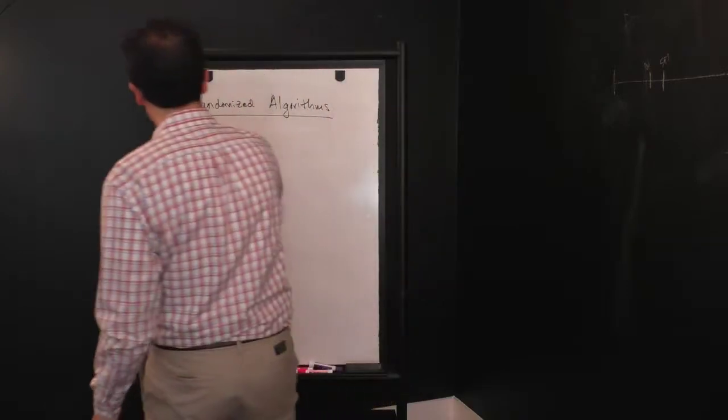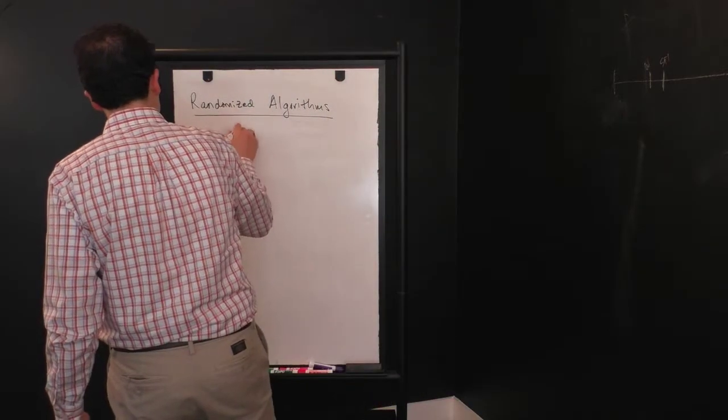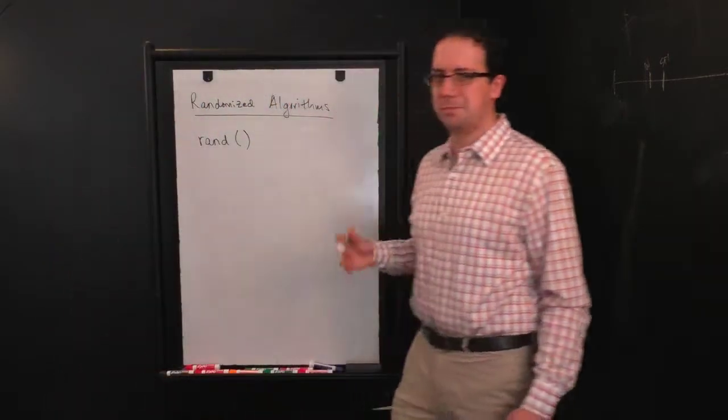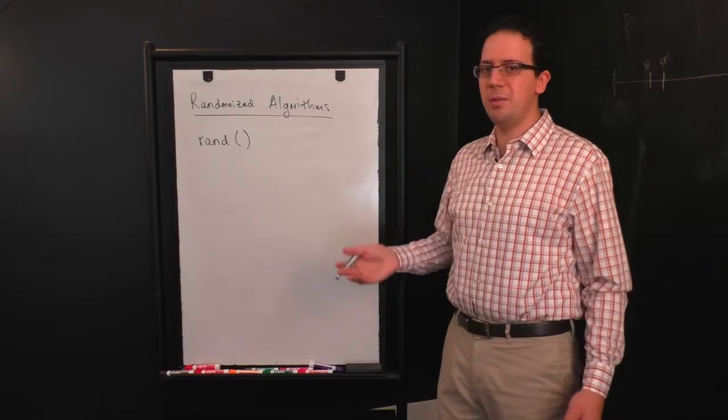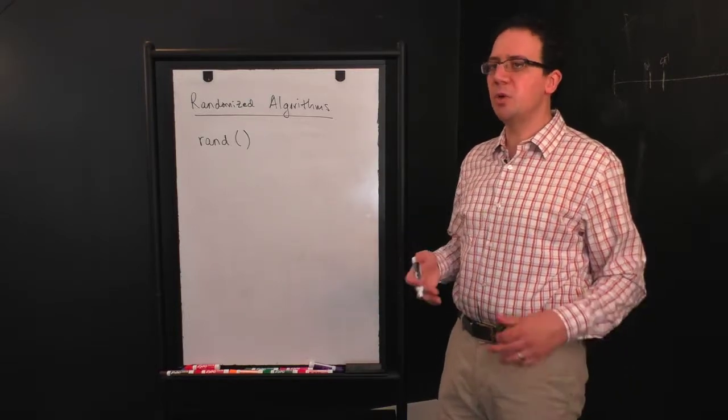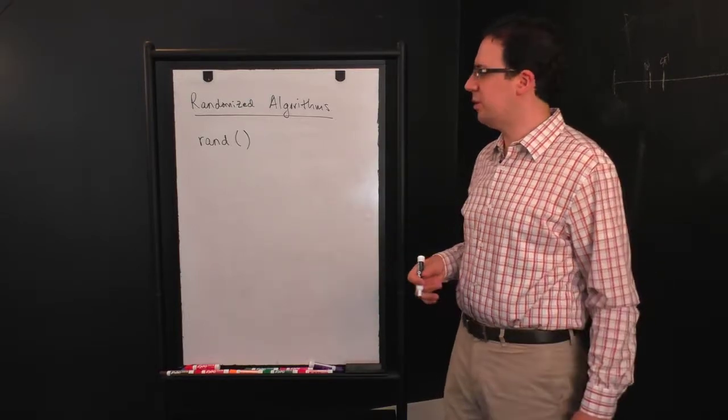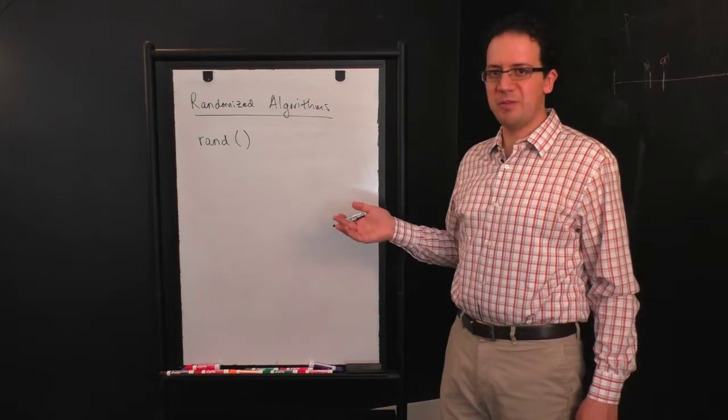In most programming languages, there's some function called something like rand, which gives you a random bit or a random integer or a random floating point number between zero and one, but where does it get its randomness from?